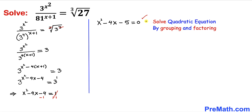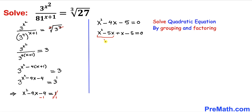Now we can see that this is our quadratic equation and we are going to solve it by grouping and factoring. We are going to tweak this part — negative 4x could be written as negative 5x plus x. So therefore we can write x squared minus 5x plus x minus 5 equal to 0. Now x is common between the first two terms and 1 is common between the last two terms. Factoring out x, we got x times x minus 5, plus 1 times x minus 5, equal to 0.